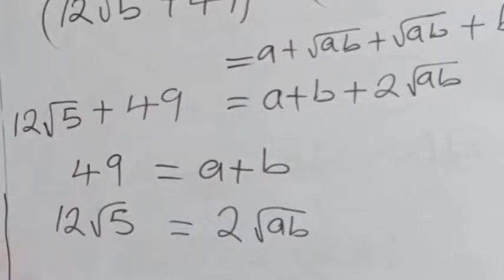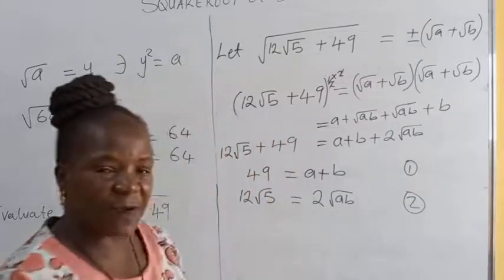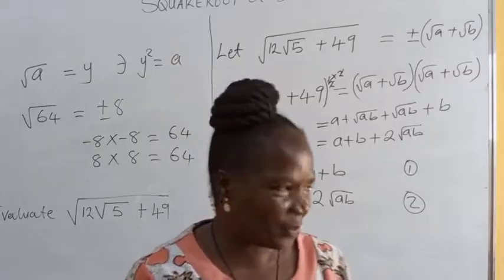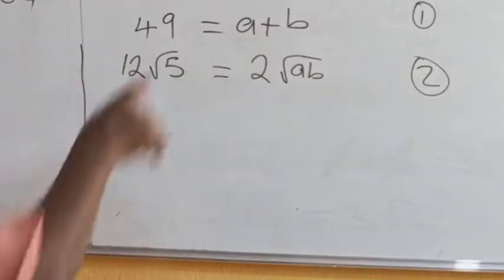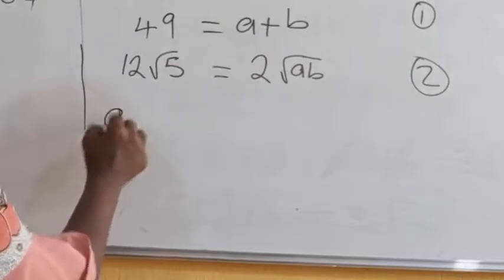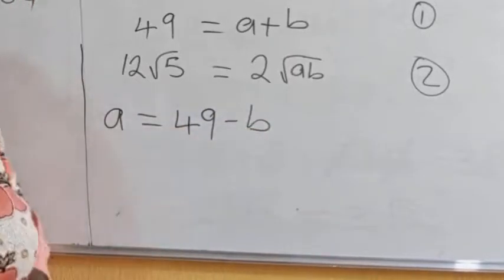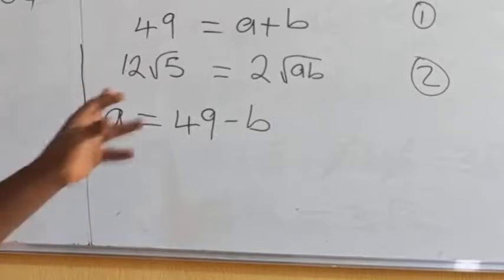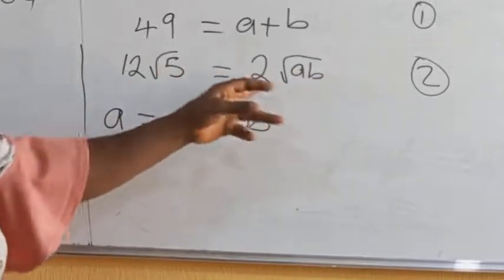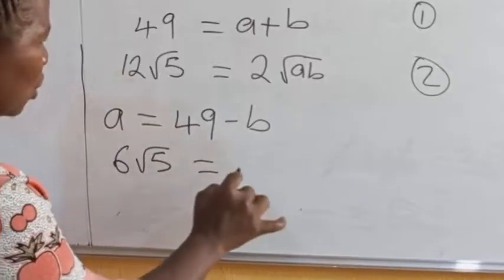Our job is to find a and b. We have two equations and two unknowns. From equation 1, a = 49 − b. From equation 2, dividing both sides by 2: 6√5 = √(ab). Squaring both sides: 36 × 5 = ab, so 180 = ab. We substitute the value of a from equation 1 into equation 2: 180 = (49 − b) × b.